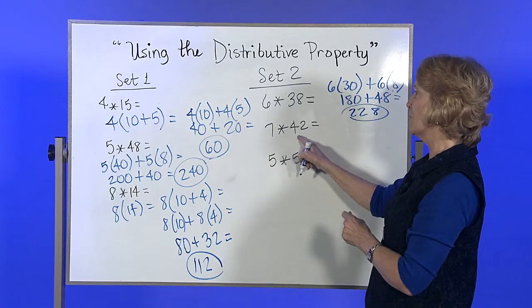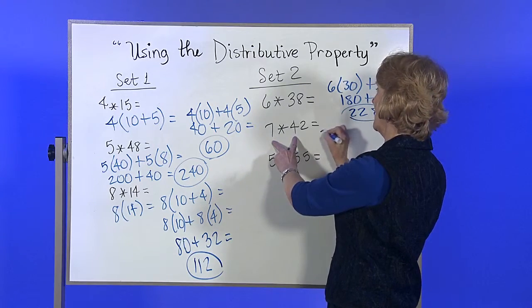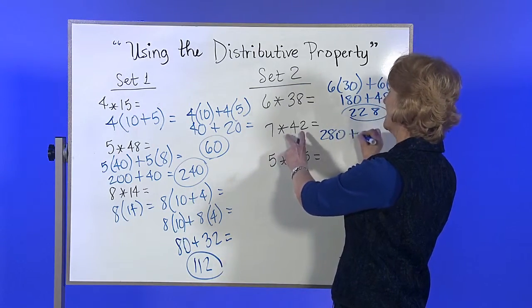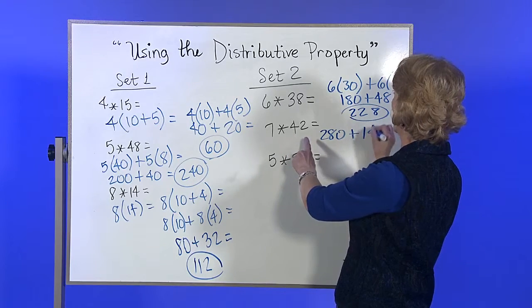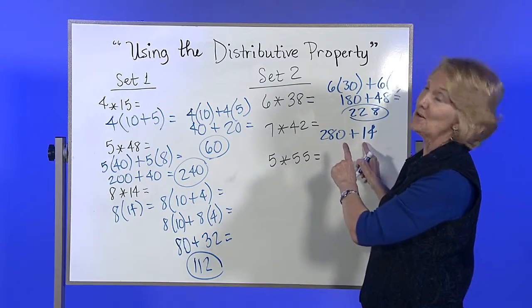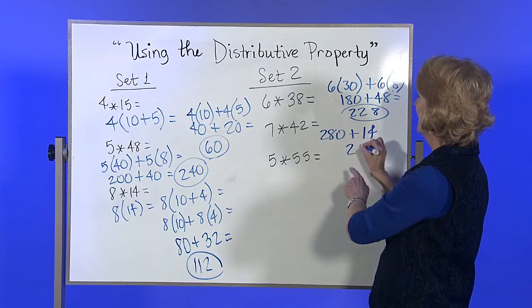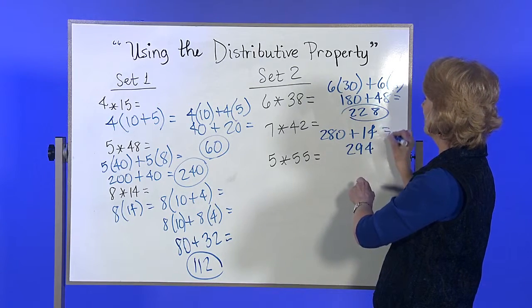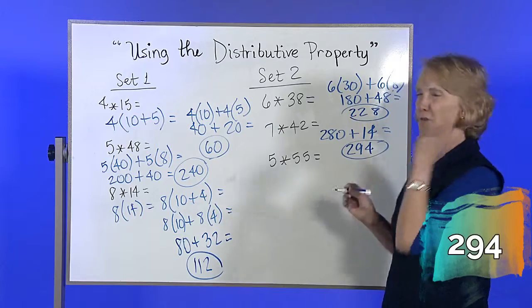7 times 42. 7 times 40 plus 7 times the 2. The only thing you add are in the tens column. 8 plus 1 gives you 9, so 294. You can do it.